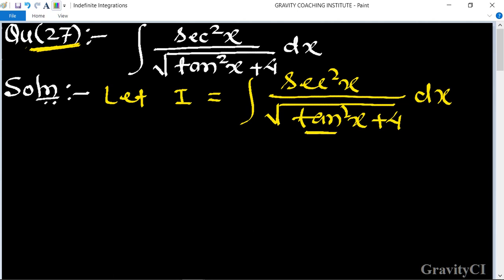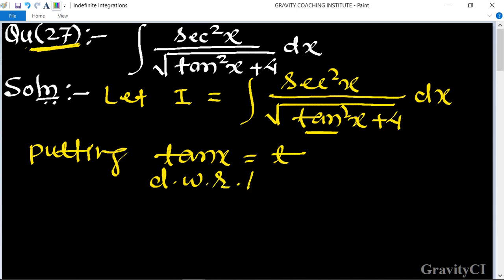Putting tanx equal to t, so differentiating with respect to t, we get sec²x dx is equal to dt.